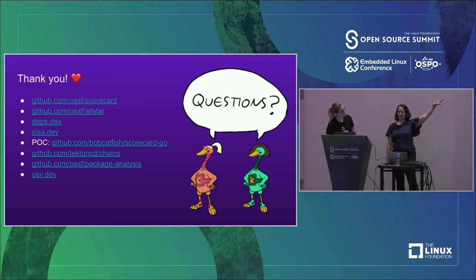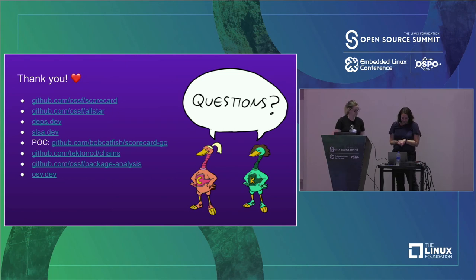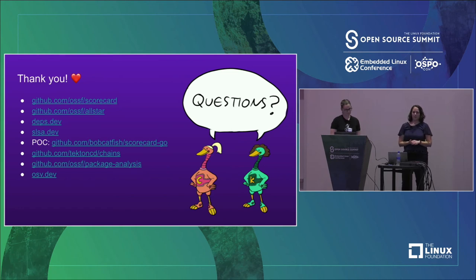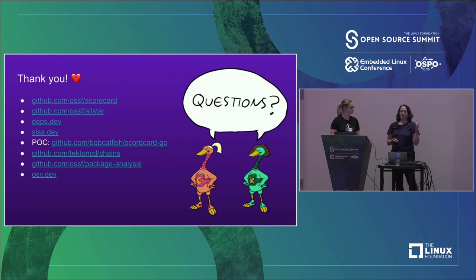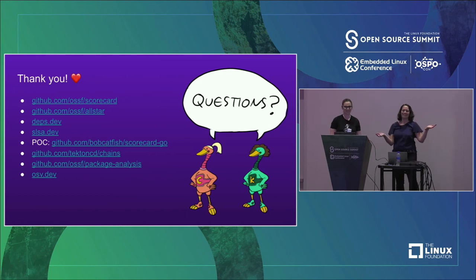Here's a link to a lot of the projects we talked about today. All of them except Deps.dev live in foundations - Tekton is part of the Continuous Delivery Foundation. A couple more to check out: the package feeds and package analysis projects in the OpenSSF are interesting as well. They're trying to detect things like typosquatting while packages are being imported in package managers in real time. And OSV is another interesting project that ties into Scorecards, looking to see if there are any unpatched vulnerabilities.